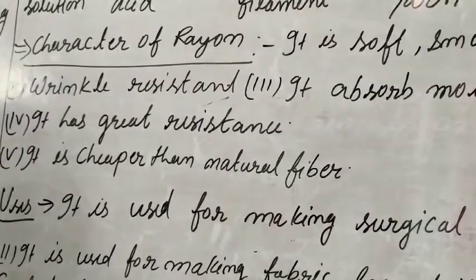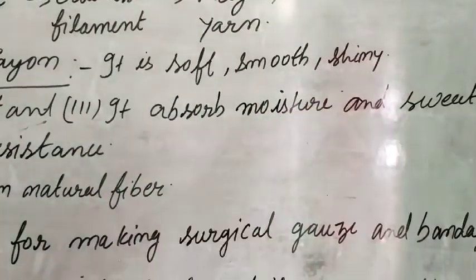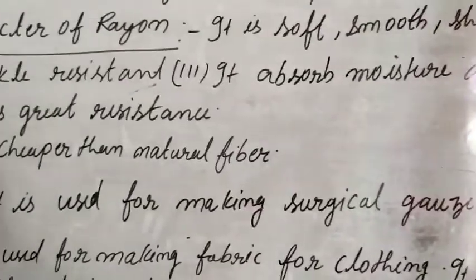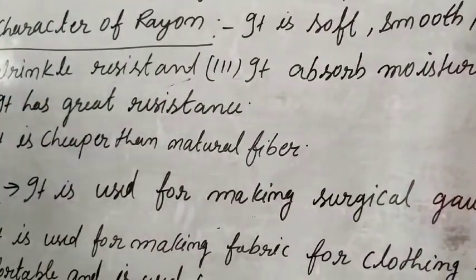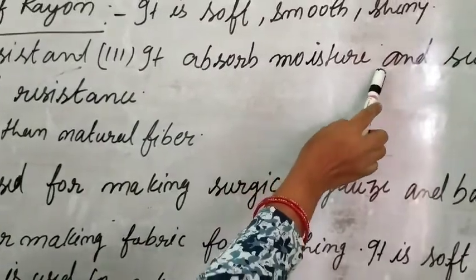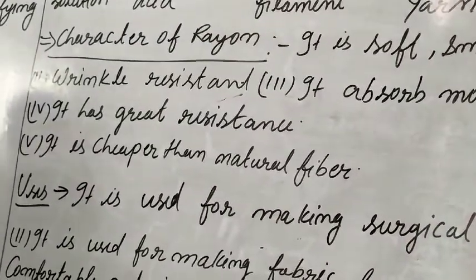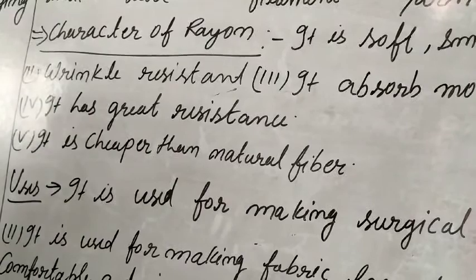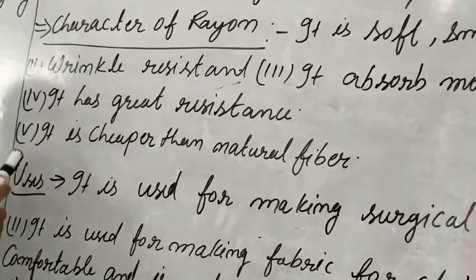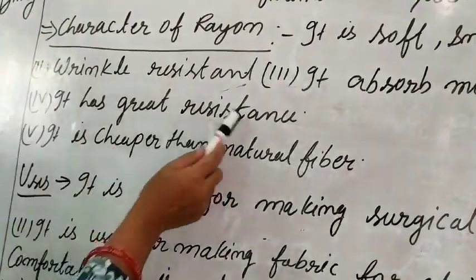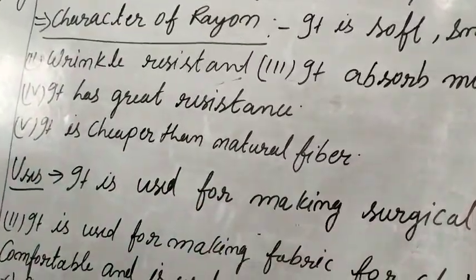Let's see the characteristics of Rayon. It is soft, smooth and shiny. It is wrinkle resistant. It absorbs moisture. Despite being a synthetic fiber, it has great resistance. It is cheaper than natural fiber.